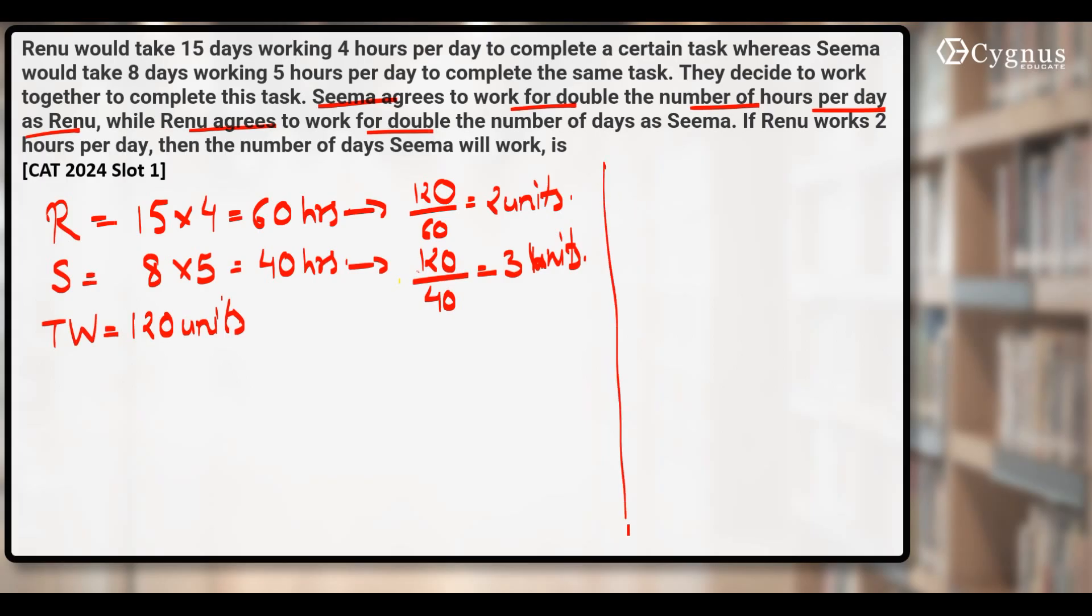Let's assume that Seema will work for n days. Renu agrees to work for double the number of days as Seema, so Renu will have to work for 2n days.